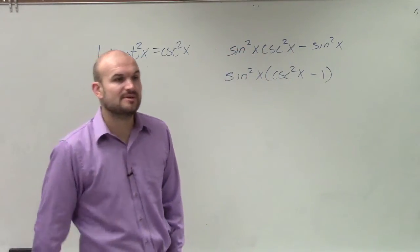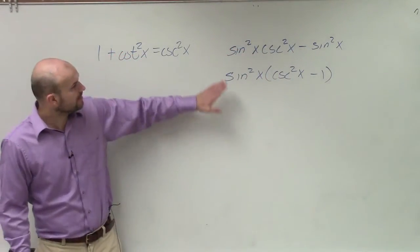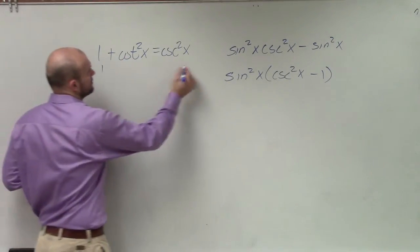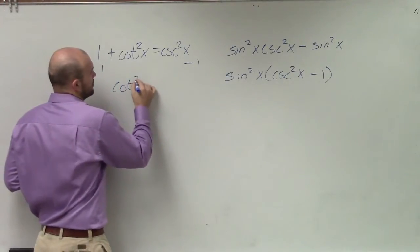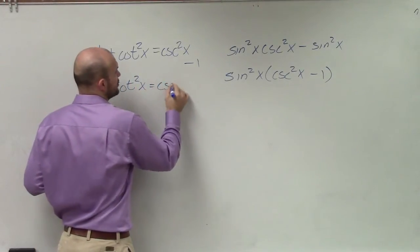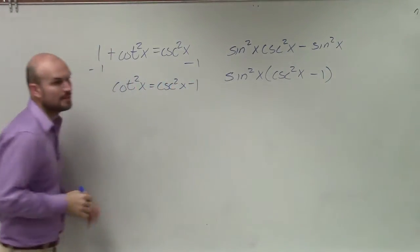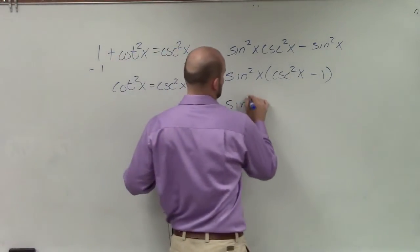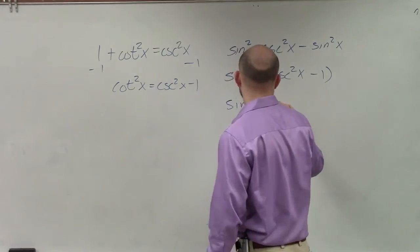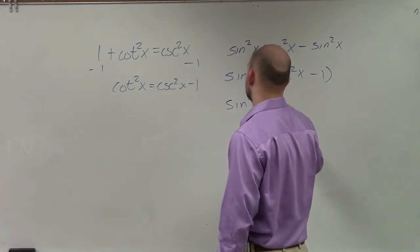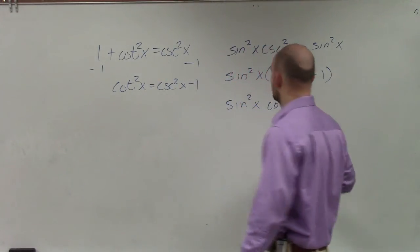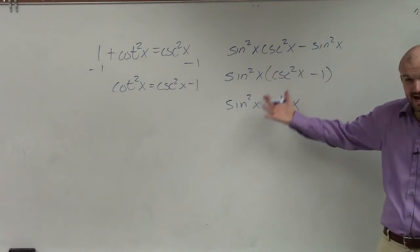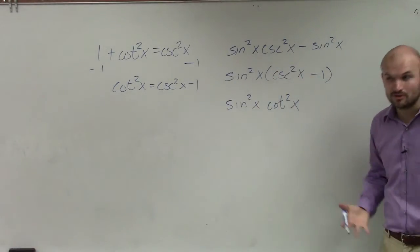Now, when I'm going to be looking at this, now I can say, all right, well, if I want to get this to be cosecant minus 1, cotangent squared of x equals cosecant squared of x minus 1. Now, I can plug in cotangent in for here. So I have sine squared times cotangent squared. So I kind of simplified this down. Now it's sine squared times cotangent squared.